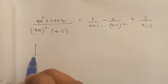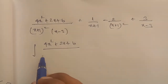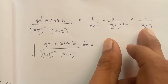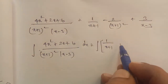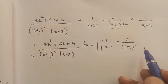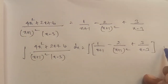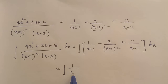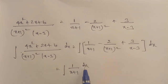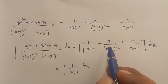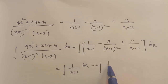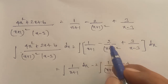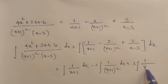So now the integration of 4x squared plus 2x plus 6 divided by (x plus 1) whole power squared into (x minus 3) with respect to dx equals integration of 1 by (x plus 1) dx, minus 2 integration of 1 by (x plus 1) whole power squared dx, plus 3 integration of 1 by (x minus 3) dx.